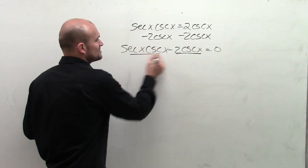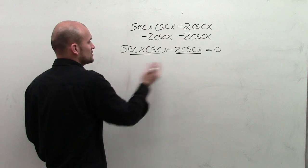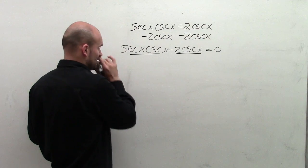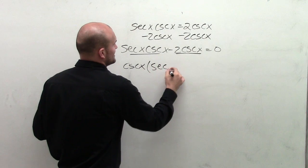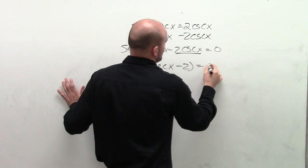And I notice that both of these terms contain a cosecant function. So I can factor out a cosecant function, cosecant of x, and that's going to leave me with secant of x minus 2 equals 0.